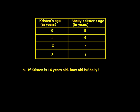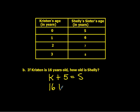Part B. If Kristen is 16 years old, how old is Shelly? Kristen's age plus five equals Shelly's age. So if Kristen is 16 and we add five, we get Shelly being 21 years old.